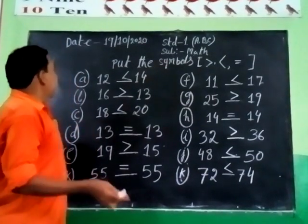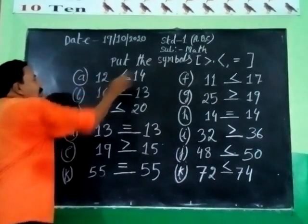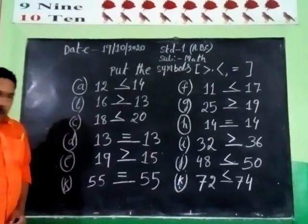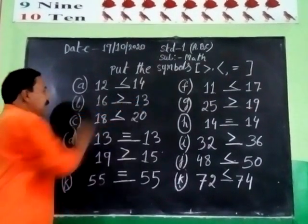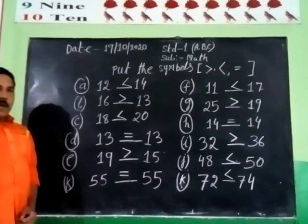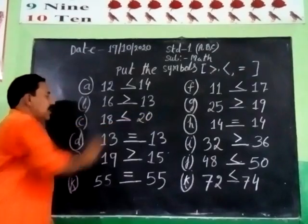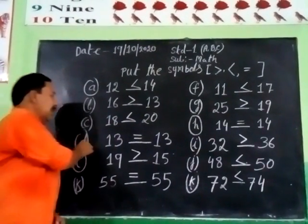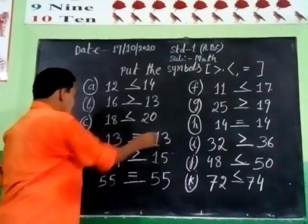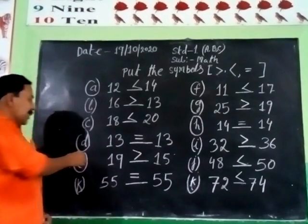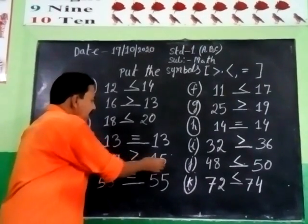Now again: Number 8 — 12 less than 40. Number 8 — 60 greater than 30. Number 8 — 18 less than 20. Number 8 — 40 equal to 40. Number 8 — 90 greater than 30.